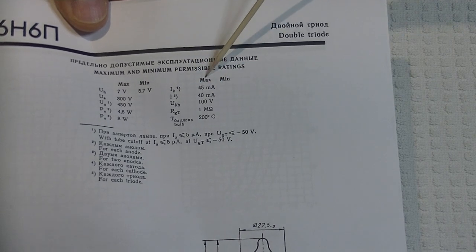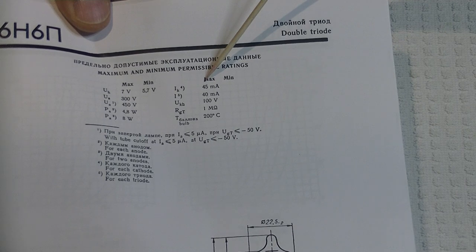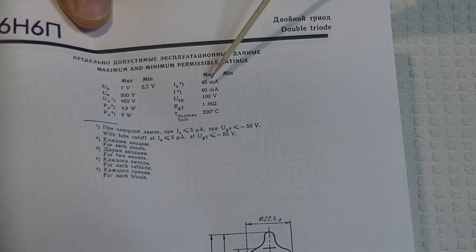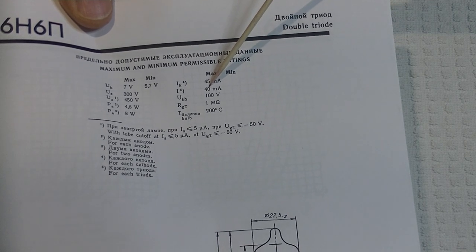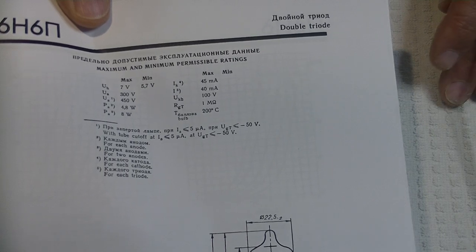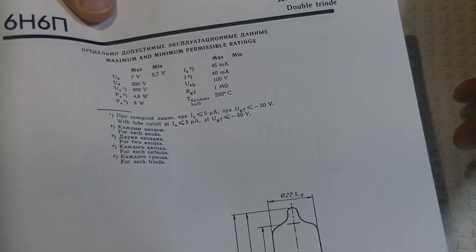This is the most interesting thing we want to look at. One half of the tube could pass 45 milliamps of current, which is quite a bit. And the two of them, if you're operating both sides, can operate 40 milliamps per side. So if you were to parallel them, that's 80 milliamps.